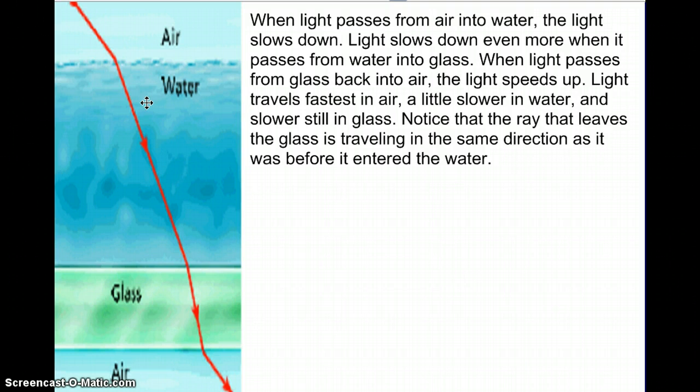Light slows down even more when it passes from water to glass, so consider, like, an aquarium. When light passes from glass back into the air, the light speeds up. Light travels faster in air, a little slower in water, and slower still in glass, okay? What I want you to notice here, I want you to notice that the angle here for air is the same as the angle as air over here, okay? It travels the same speed in air, and so it's going to go through it at the same angle.